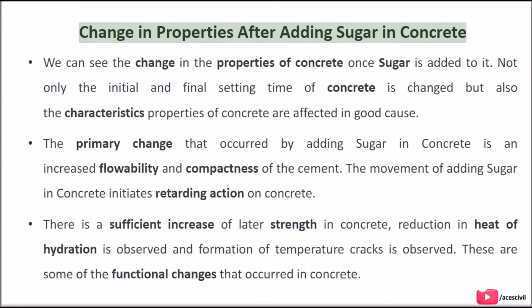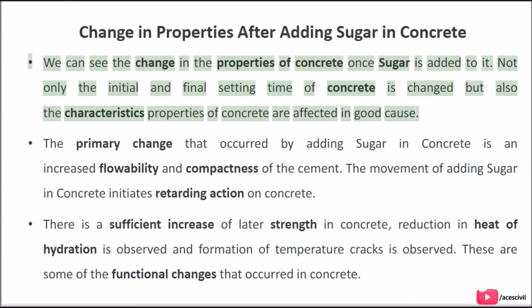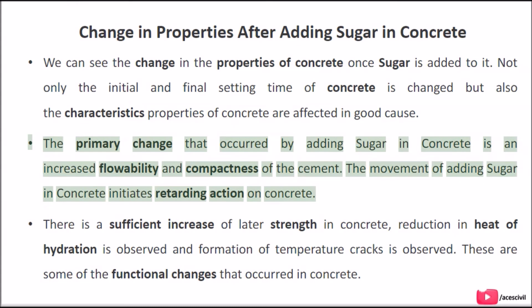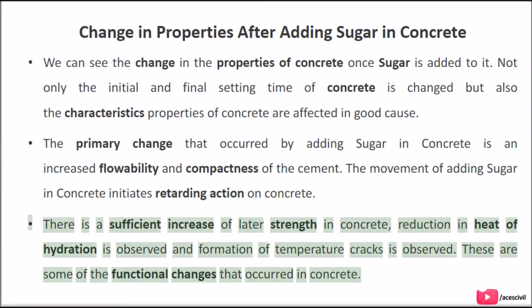Change in properties after adding sugar in concrete: we can see the change in the properties of concrete once sugar is added to it. Not only the initial and final setting time of concrete is changed but also the characteristic properties of concrete are affected in a good way. The primary change that occurs by adding sugar in concrete is increased flowability and compactness of the cement. Adding sugar in concrete initiates retarding action on concrete, there is a sufficient increase of later strength in concrete, and a reduction in heat of hydration is observed along with a reduction in the formation of temperature cracks.